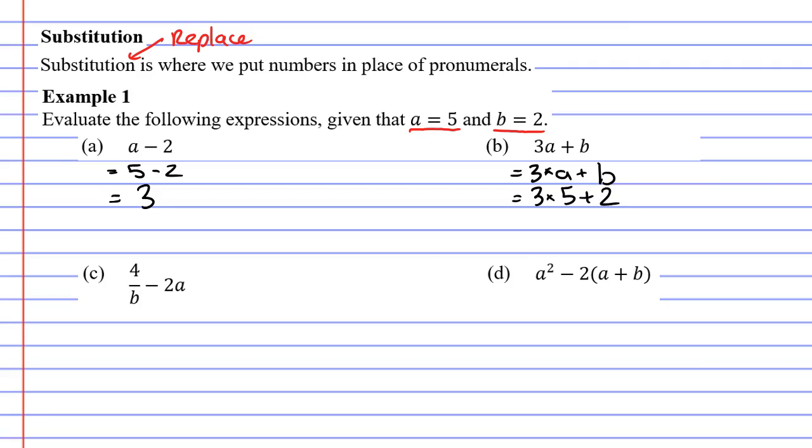Now when we work these out it's really important that we follow the order of operations, BIDMAS. Brackets come first, indices come second. Indices are like your powers or square roots. Division and multiplication come next and are equal to each other. Division does not come before multiplication and multiplication does not come before division. Lastly we have addition and subtraction which are also equal to each other. Looking at our expression in question B, we've got multiplication and addition, and according to BIDMAS multiplication needs to come before addition. 3 times 5 is 15 plus 2, and then finally 15 plus 2 is 17.